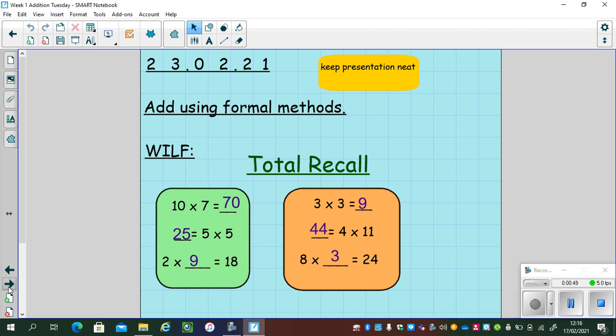Welcome back team 3. Here are the answers to our total recall this morning. 10 lots of 7, 10 times 7 is 70. 5 lots of 5 is 25. Just remember, don't let the mixed up number sentence confuse you. 5 times 5 is the same as 25 equals 5 times 5. 2 lots of 9 or 2 times 9 is 18. 3 times 3 is 9. 44 equals 4 times 11, which is the same as saying 4 times 11 is 44. And finally, 8 lots of 3 or 8 times 3 equals 24. Excellent multiplication times tables year 3.